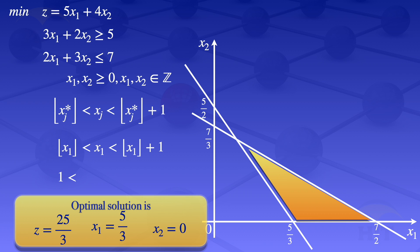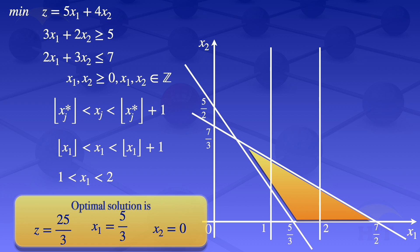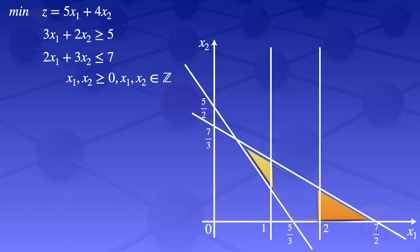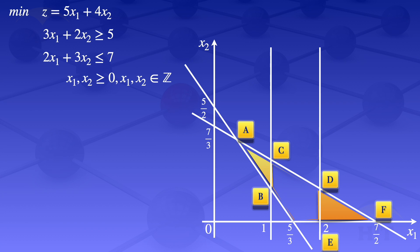On the graph, we mark x1 equals 1 and x1 equals 2 on the x-axis. We exclude the feasible region between those two values. After excluding that region, we are left with a new feasible region that has corner points labeled A, B, C, D, E, and F.